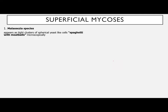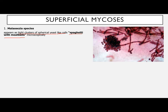Under superficial mycosis, we have the Malassezia species. When you view this microscopically, these are fungi that appear as tight clusters of spherical yeast-like cells, resembling a spaghetti-with-meatball appearance. Remember: if it's a spaghetti-with-meatball appearance fungi, it's your Malassezia species. The yeast cells are in a tight cluster, with certain hyphae that make it look like spaghetti.